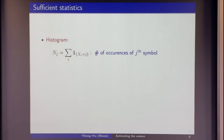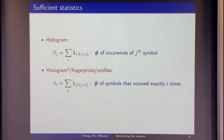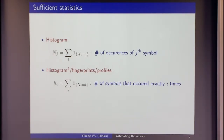The sufficient statistic for this problem is, first, the histogram — the number of occurrences of symbol j. But because the quantity we want to estimate is permutation invariant, the histogram of the histogram is also sufficient. This is called fingerprints or profiles: the number of symbols that occurred exactly once, twice, three times, and so on. h₀ is precisely the number of unobserved symbols — which is not directly computable.